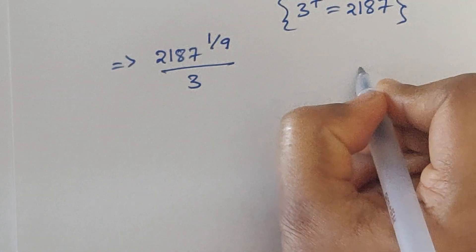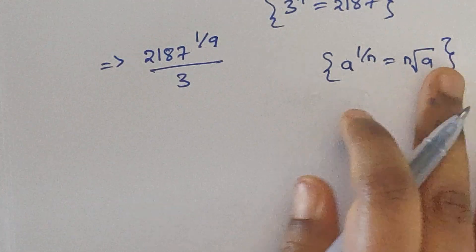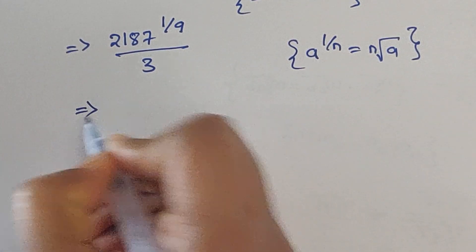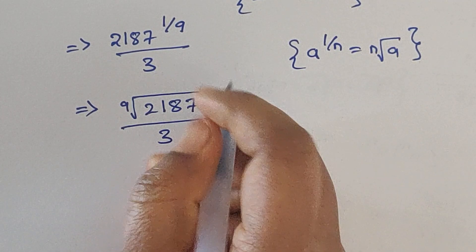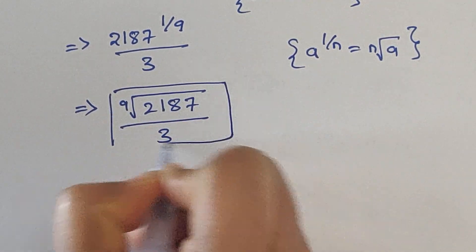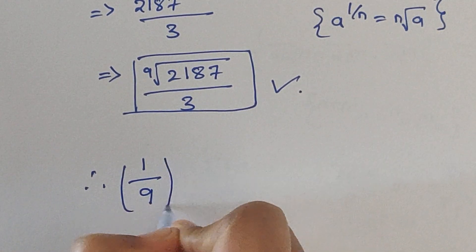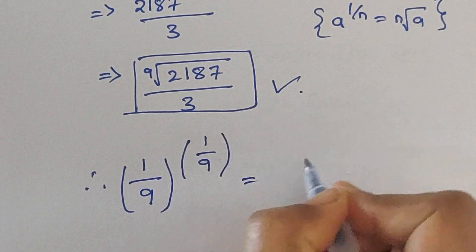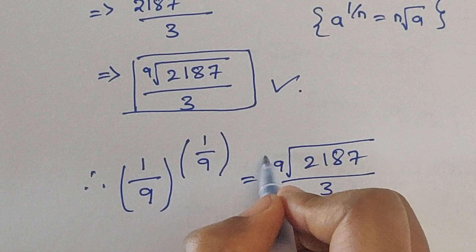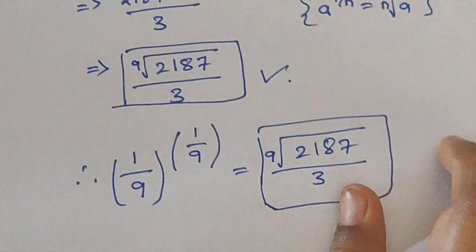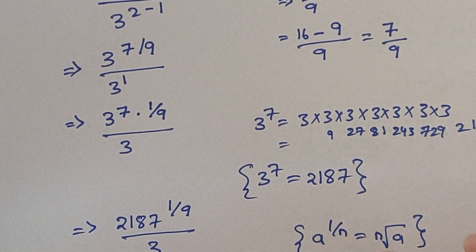Using the law a to the power of 1/n equals n-th root of a, we write the 9th root of 2187, divided by 3. So the final answer is: (1/9) to the power of 1/9 equals the 9th root of 2187, divided by 3. Thank you for watching — please subscribe for more videos. Thank you!